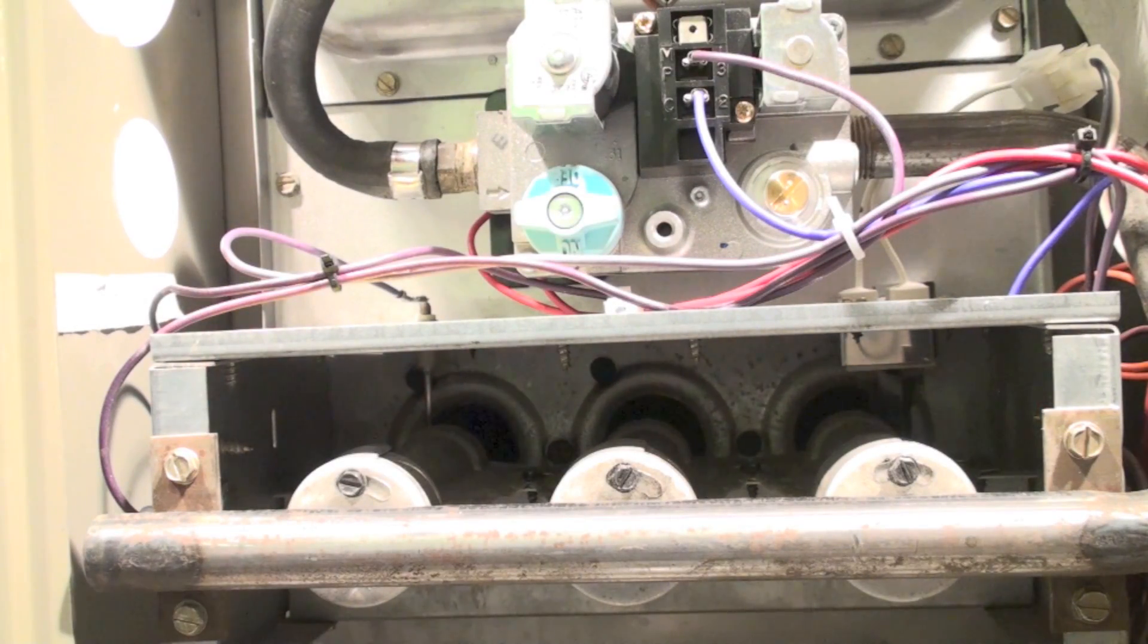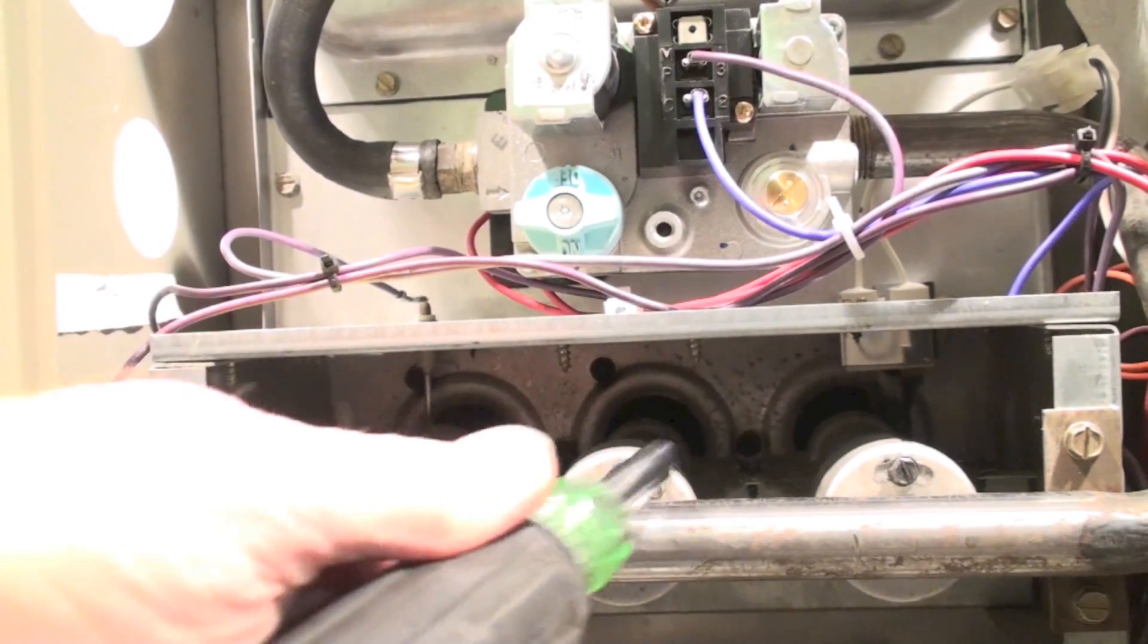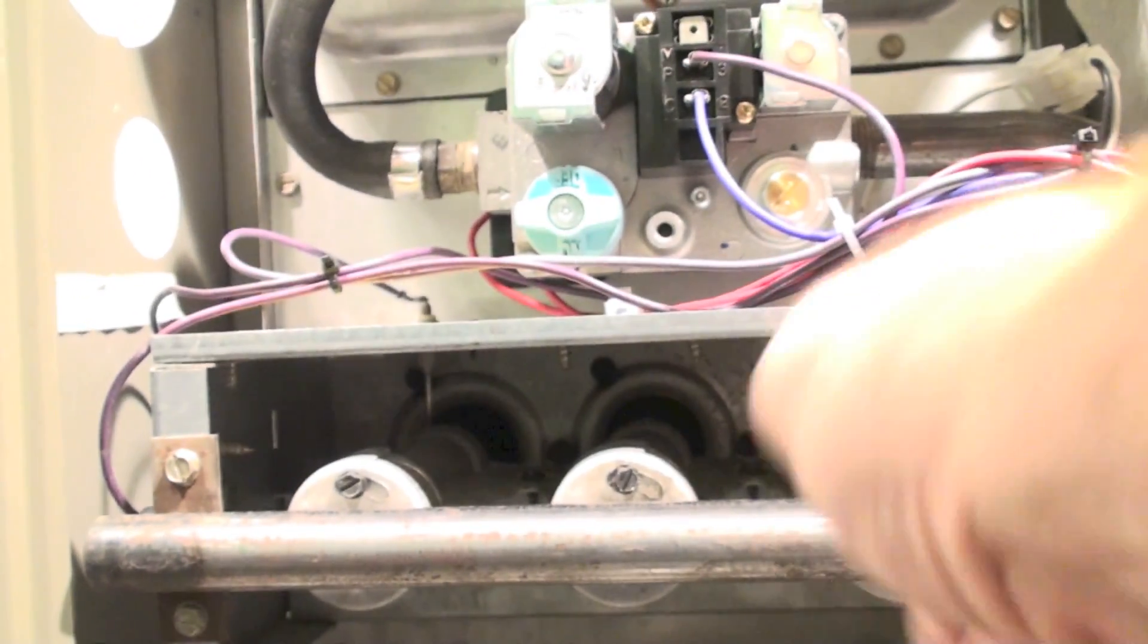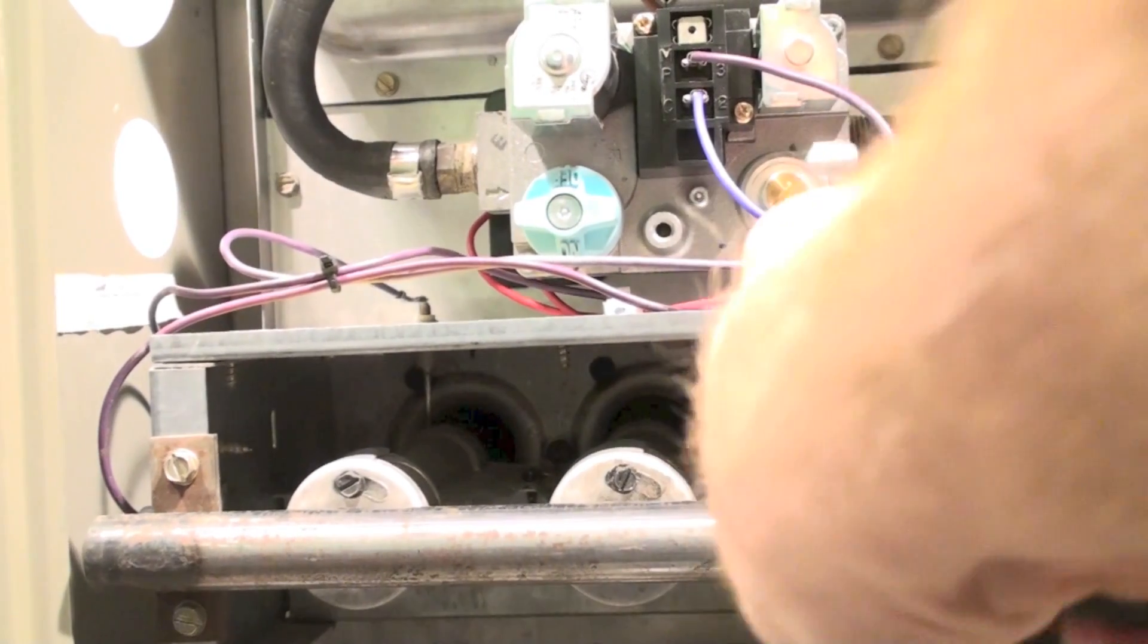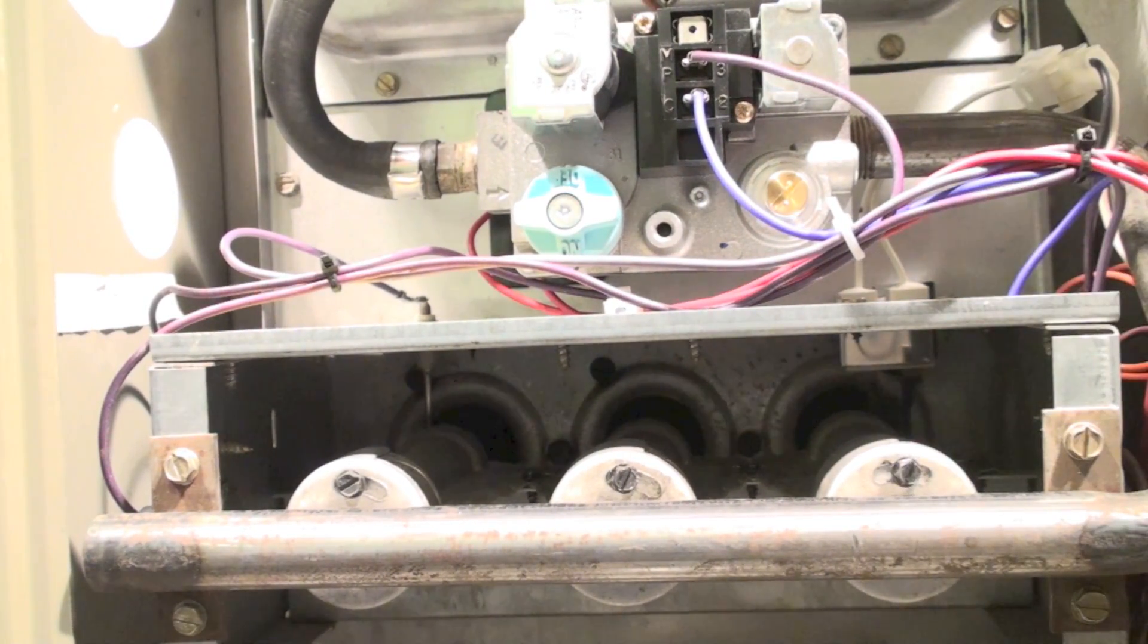Okay, once we have the firing rate correctly set, we're going to adjust the burners. Now most new furnaces do not have adjustments on their burners anymore - they've taken that out - but this one does. It's kind of hard to tell on these in-shot burners when they're burning right. What we'd like to do is get rid of the yellow tips.